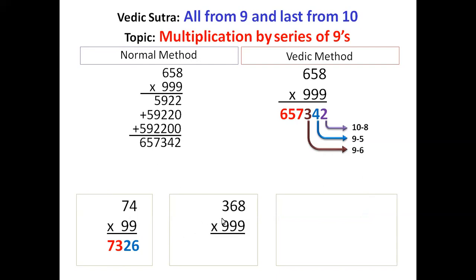Next example. First step, 1 less. That is 368 minus 1 is 367, what is written here in red.